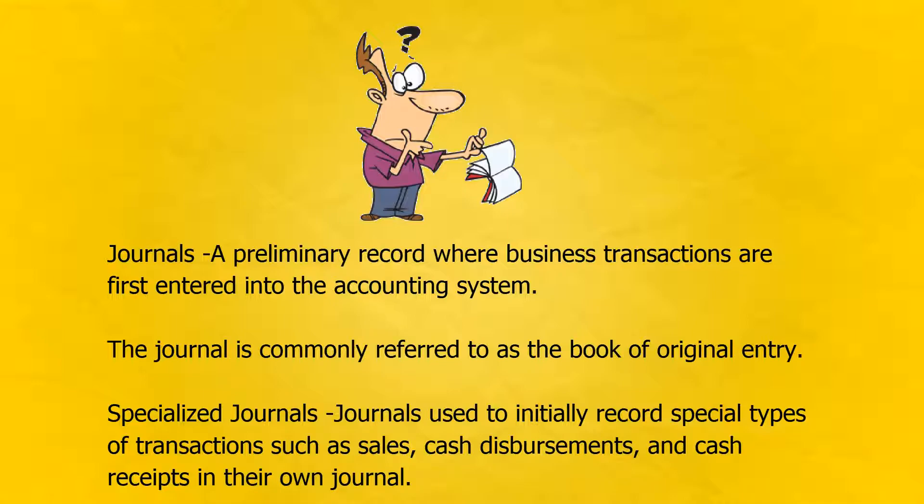The journal is commonly referred to as the book of original entry. Specialized Journals: journals used to initially record special types of transactions such as sales, cash disbursements, and cash receipts in their own journal.